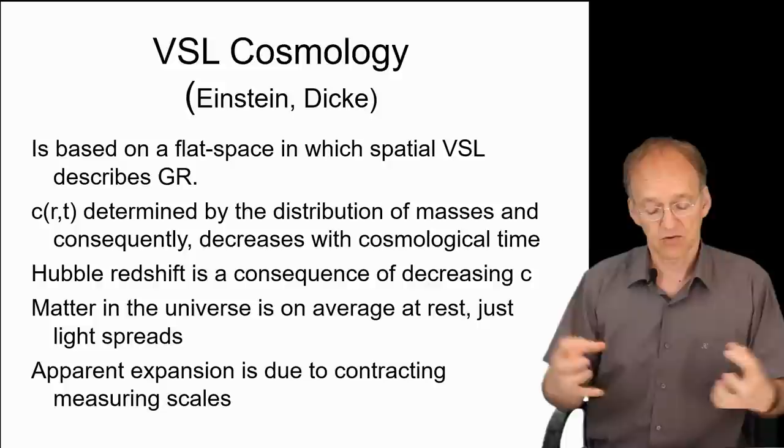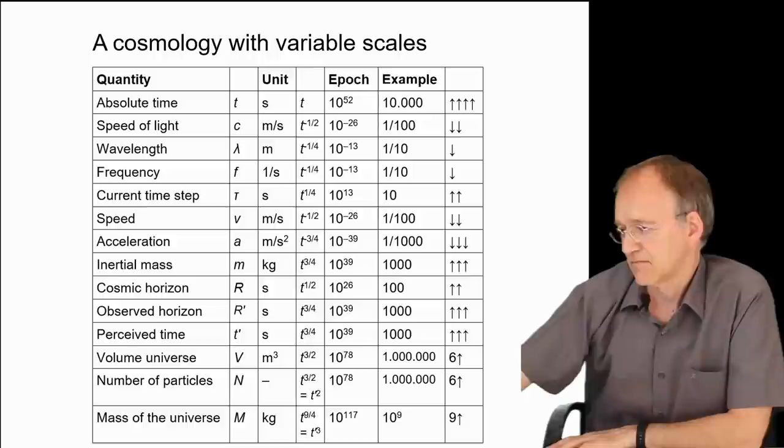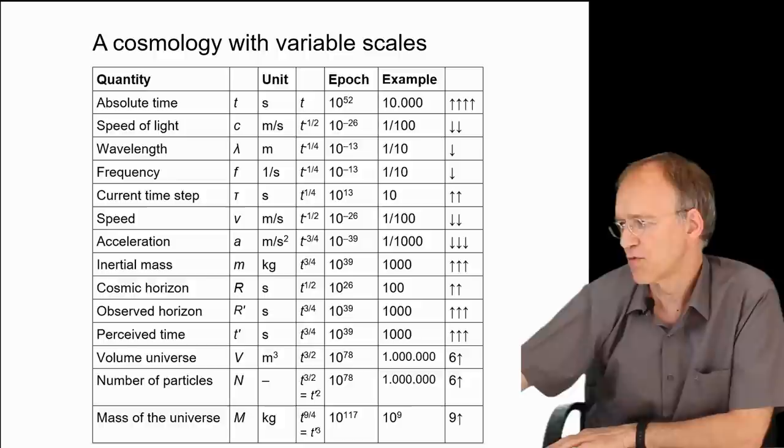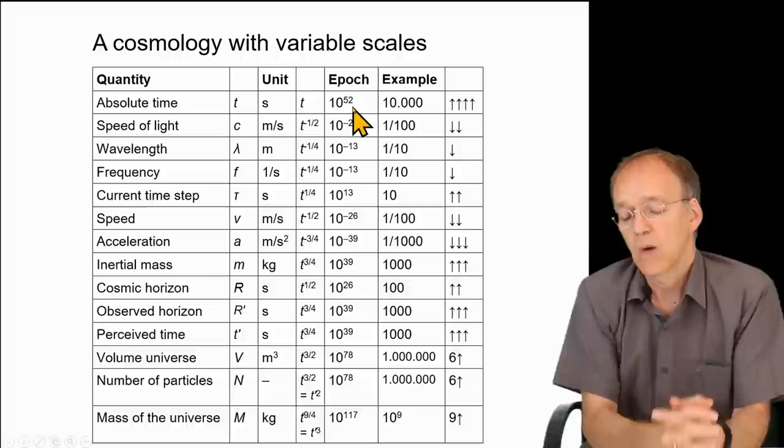Now we have this picture of a cosmology with variable scales. I don't go too into the details, as I said it's also in the other video, but it's important to understand it's a consistent picture. To be perfectly clear, maybe a little example: we live in the absolute epoch now, 10^52.